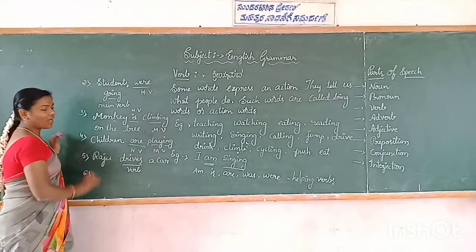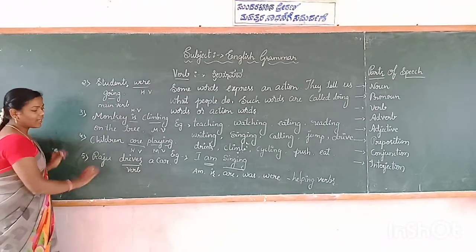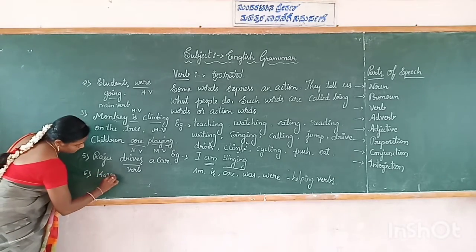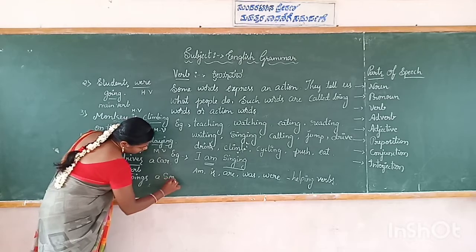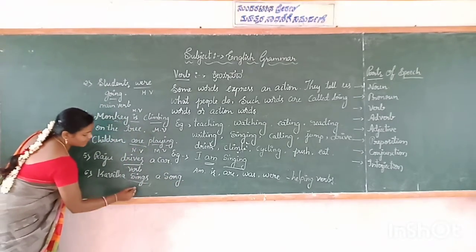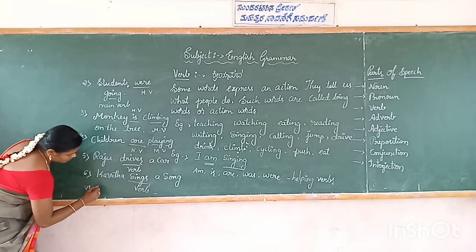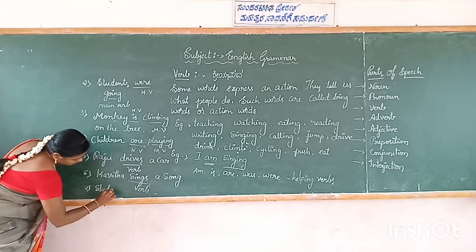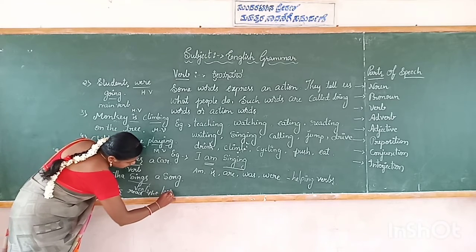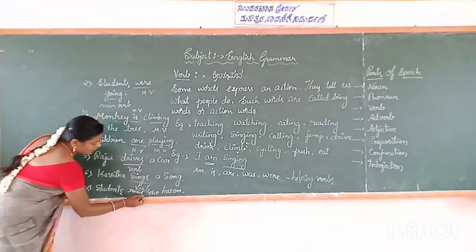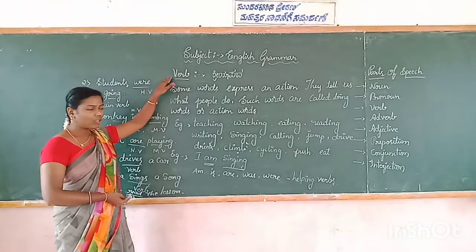If they mention a helping verb, you also mention it. But if there is no helping verb, they mention only the main verb — you will underline only the main verb. Kavita sings a song — 'sings' is a verb. Students read the lesson — 'read' is a verb. So I hope dear students, you understood the meaning of verb and examples of verb.